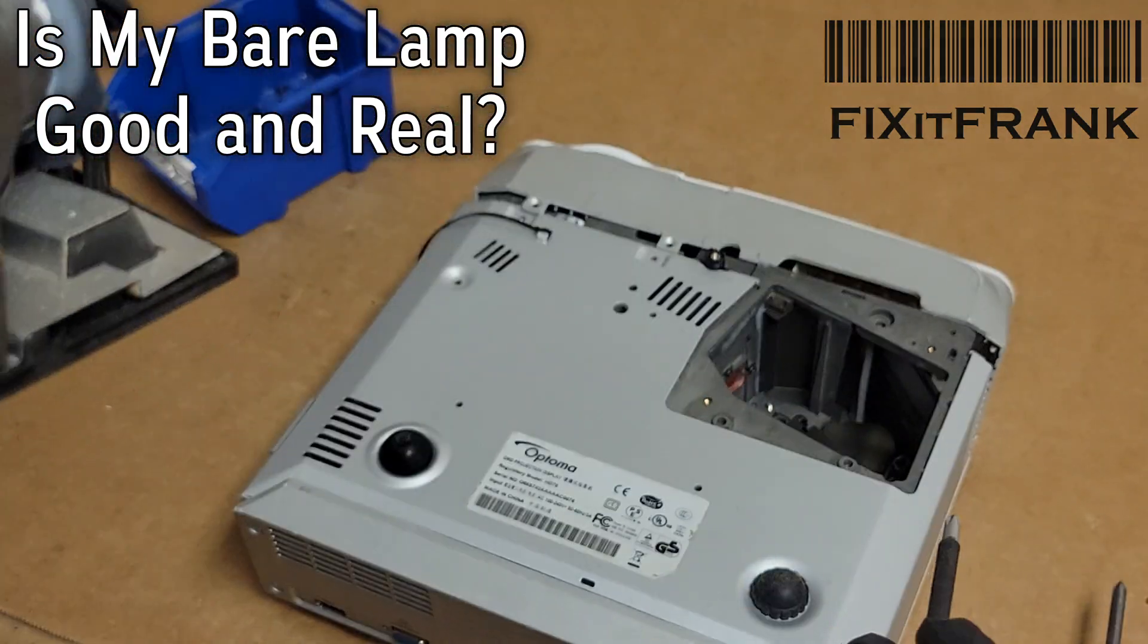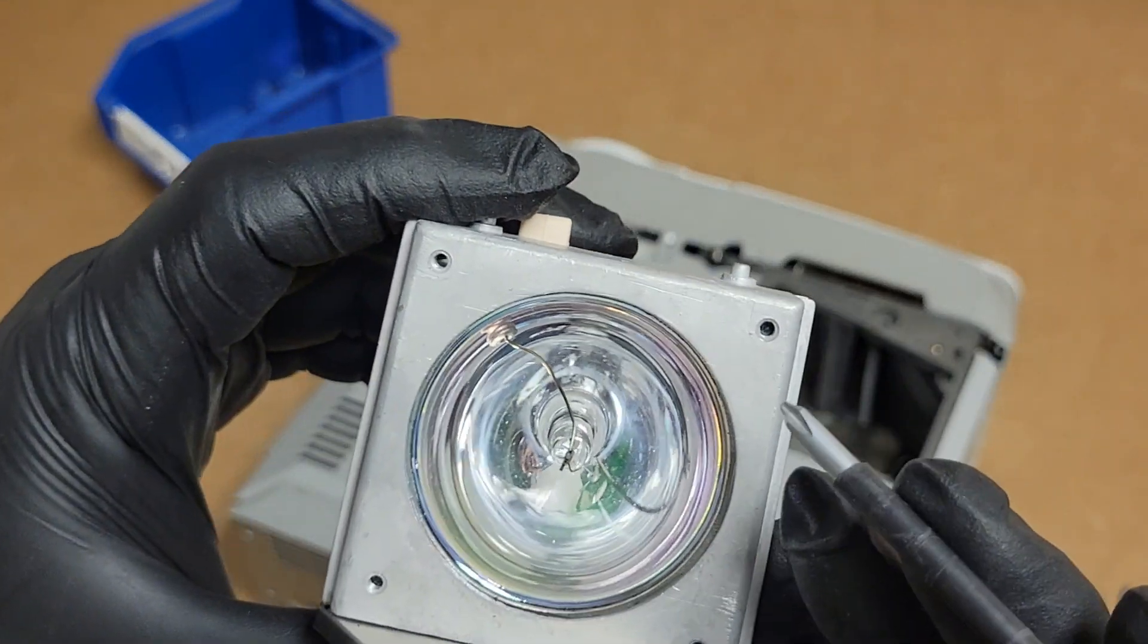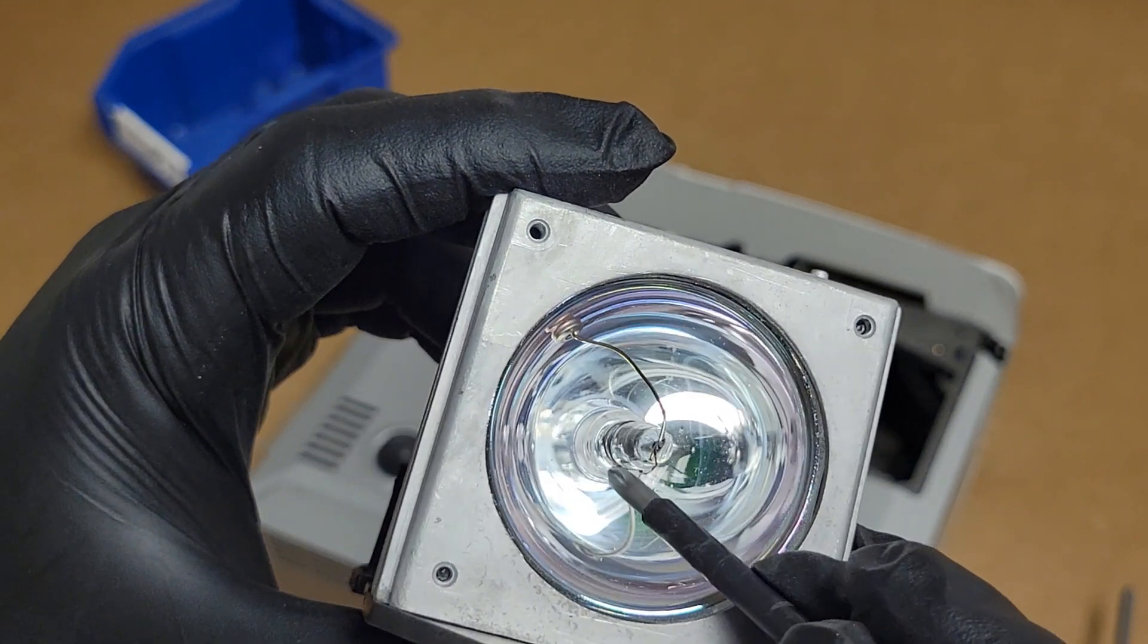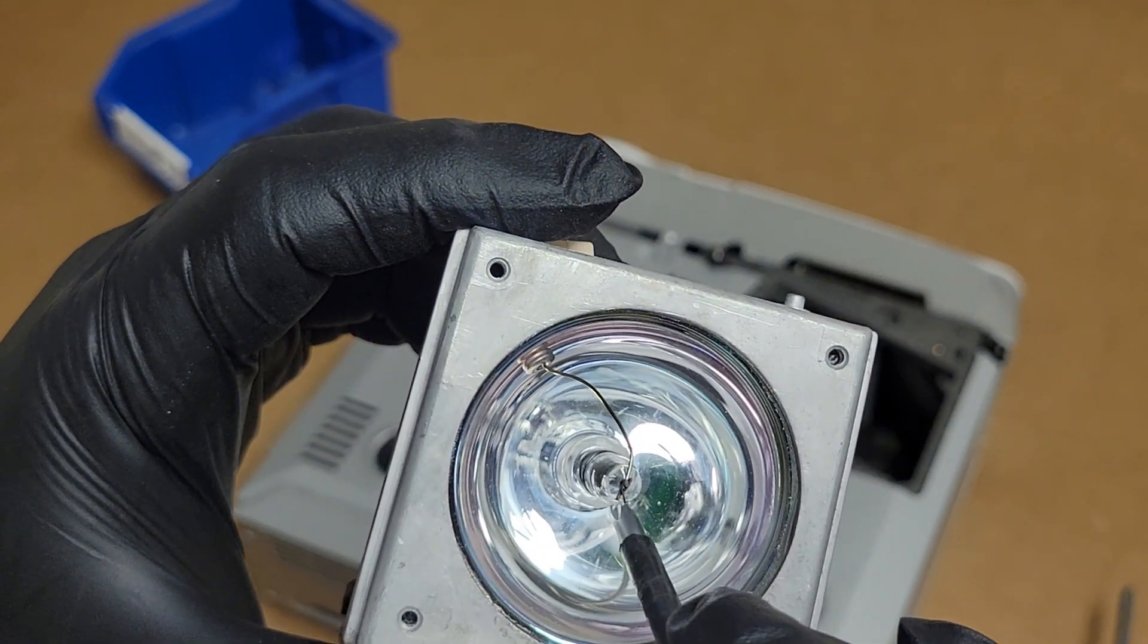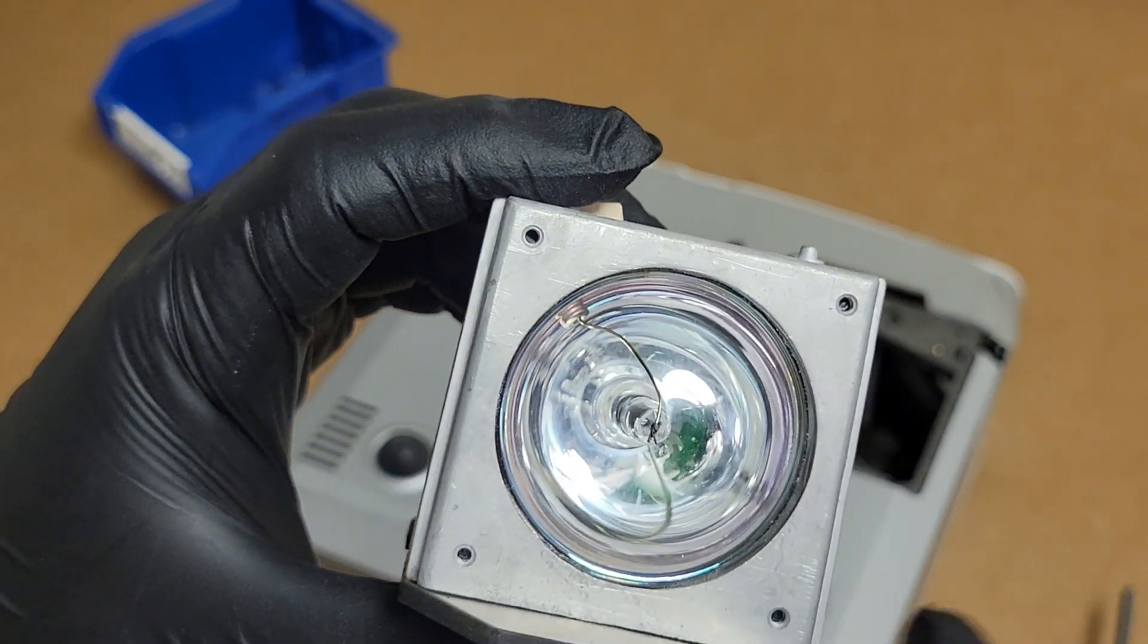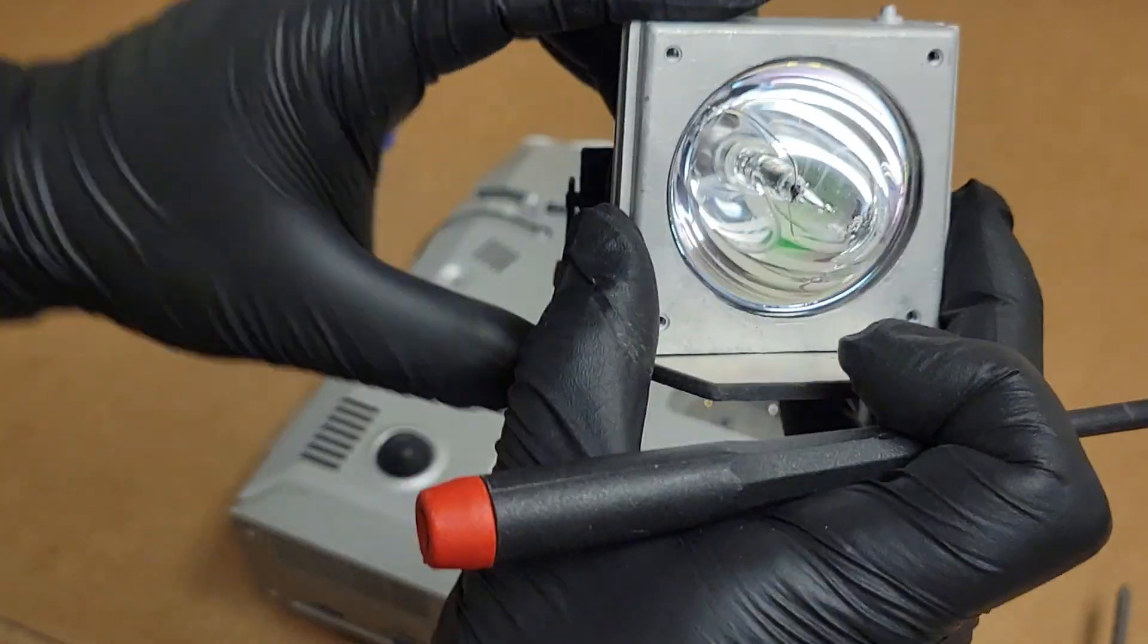One of the things I look for in a lamp assembly to see if it's still good is the condition of this portion of the arc tube. That is the actual bulb.